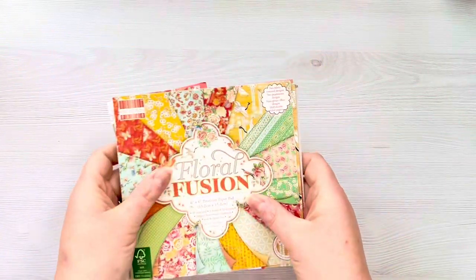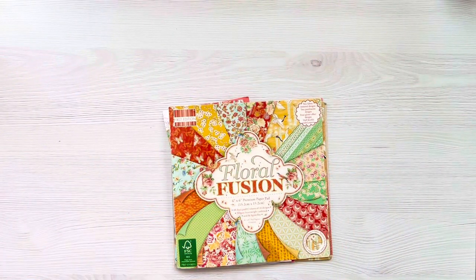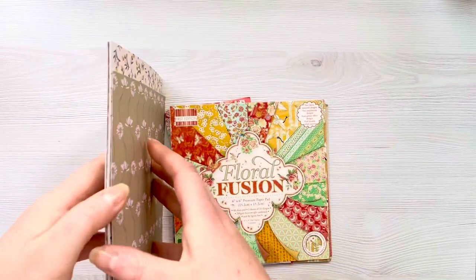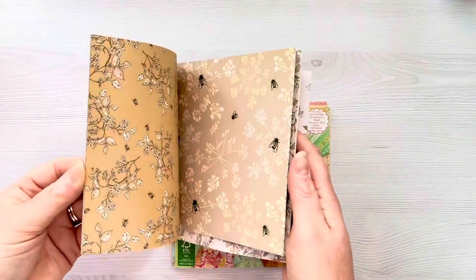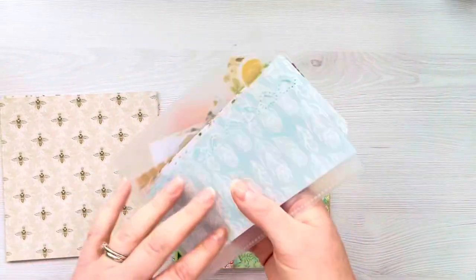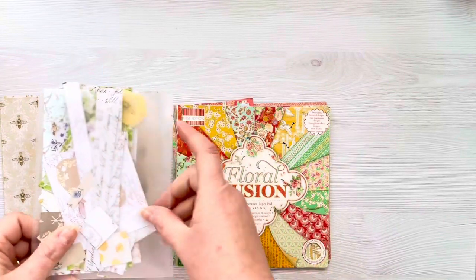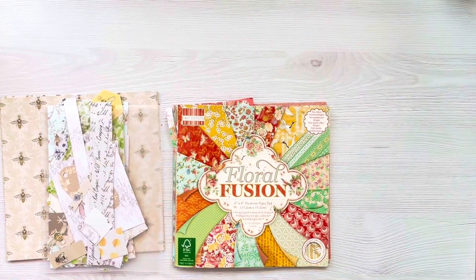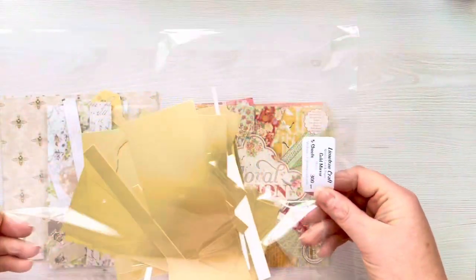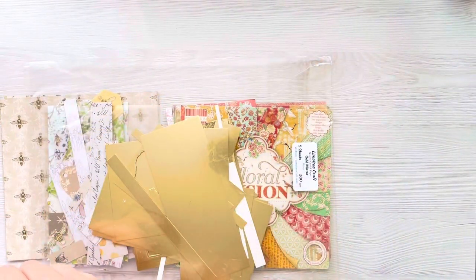I have this 6x6 paper pad called Floral Fusion and another paper pad from Craft Consortium. I've only got a few sheets left of each so I really want to try and start using up some of my patterned paper. I've also got some metallic gold cardstock scraps that I tend to keep all together.